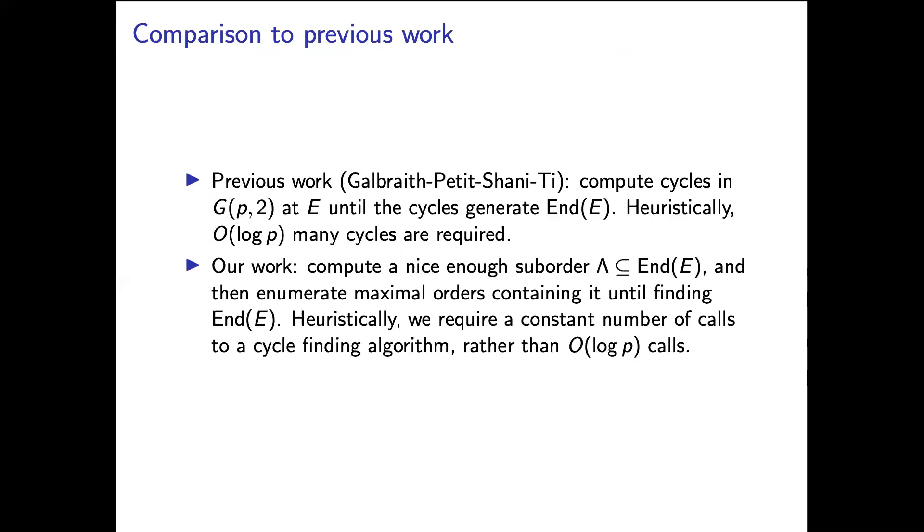In our work we're instead going to compute a good quality suborder and then enumerate maximal orders containing it until finding the endomorphism ring. So heuristically this enumeration step is going to take less time than it takes to compute one extra cycle. And also heuristically we expect to only need a constant number of cycles to find one of these nice enough suborders. So altogether we get an algorithm which takes a constant number of calls to our cycle finding algorithm and the cycle finding algorithm takes about square root p time. This means overall we save a humble factor of log p in the complexity.